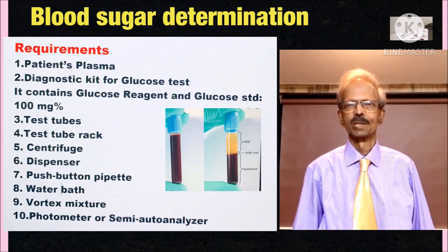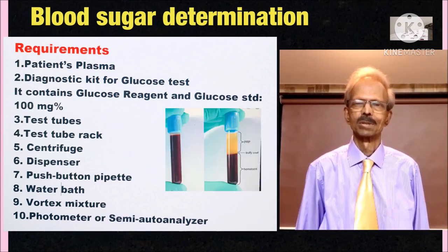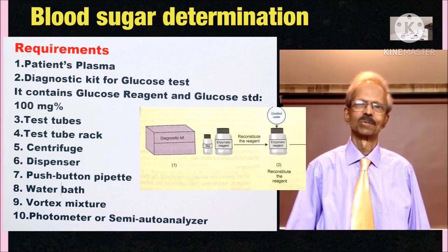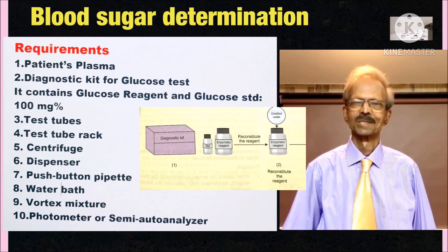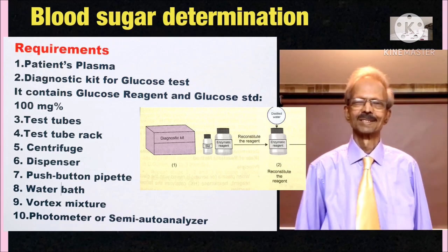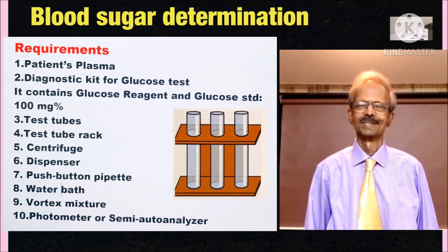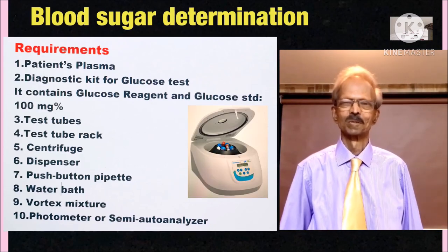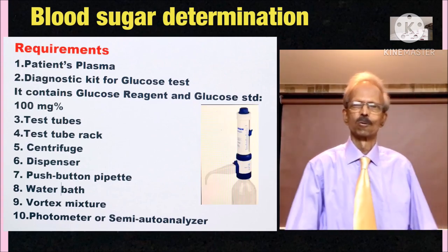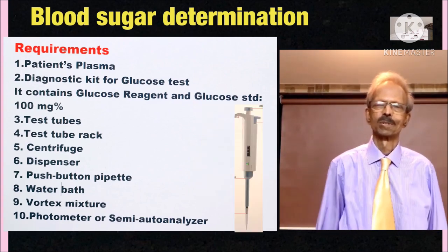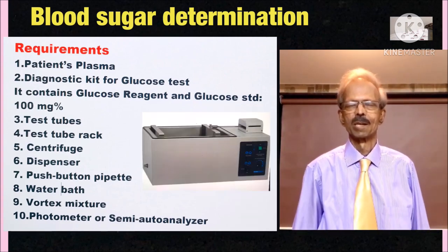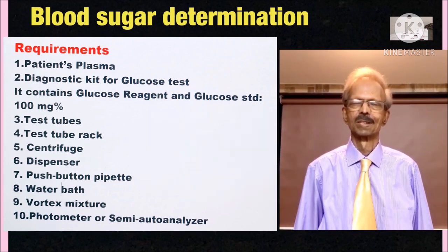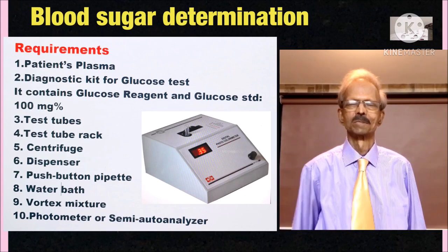Requirements: 1. Patient's plasma, 2. Diagnostic kit for glucose test — it contains glucose reagent and glucose standard at 100 mg%, 3. Test tubes, 4. Test tube rack, 5. Centrifuge, 6. Dispenser, 7. Push-button pipette, 8. Water bath, 9. Vortex mixer, 10. Photometer or semi-auto-analyser.